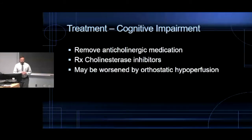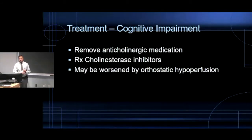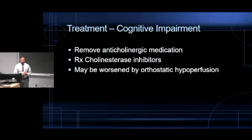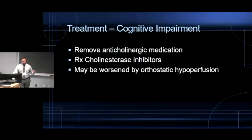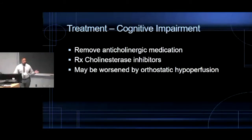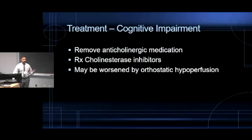When you have cognitive impairment in Parkinson's disease, your first step is to reduce their anticholinergic burden — that includes both medication used for treating Parkinson's symptoms and other anticholinergic medications. Then consider prescribing cholinesterase inhibitors. Also note that cognitive impairment can be worsened by orthostatic hypoperfusion — if patients have very severe orthostatic hypotension, even if not symptomatic from dizziness, it may be worsening their cognitive impairment. Sometimes it's worth treating the orthostatic hypotension, particularly by removing antihypertensives and pushing fluids.